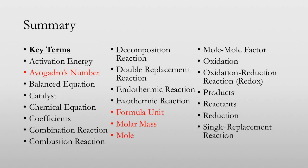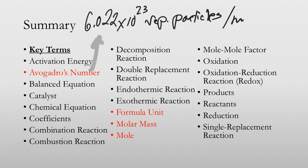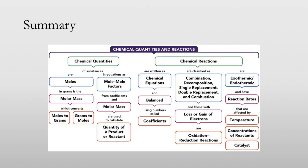In this lesson we talked about Avogadro's number being 6.022 times 10 to the 23rd representative particles per mole. We had formula units which were used for ionic compounds. Molar mass is the mass of a mole of a substance, and then a mole...